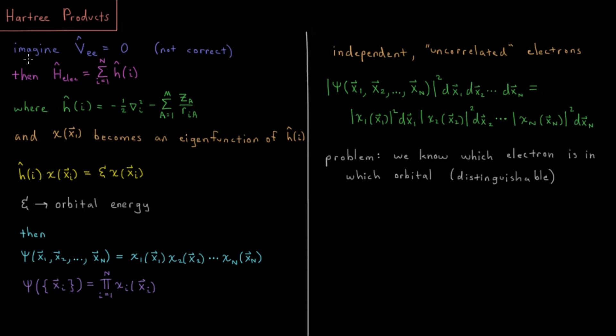Let's start off by imagining that electrons don't repel one another. This isn't correct, but for the sake of argument, let's just think about what would happen if that were the case.